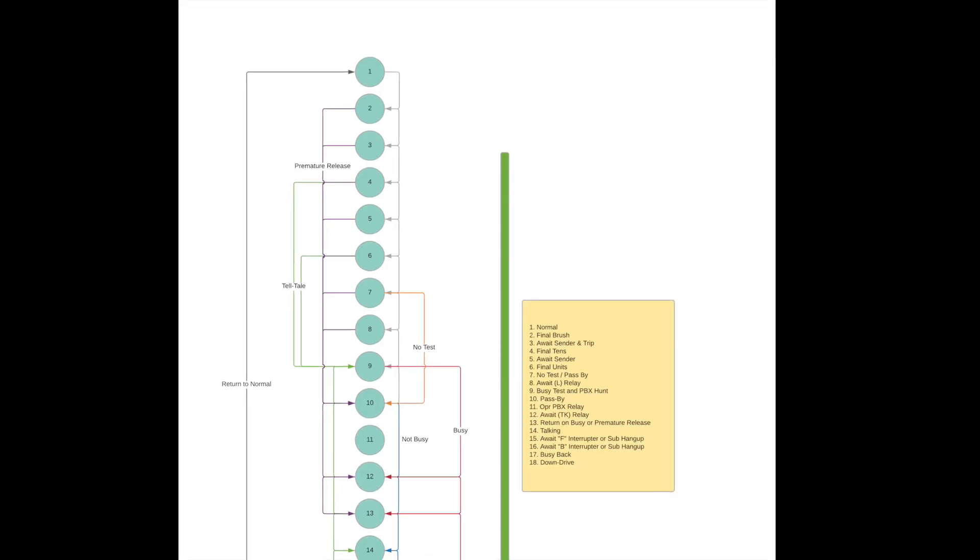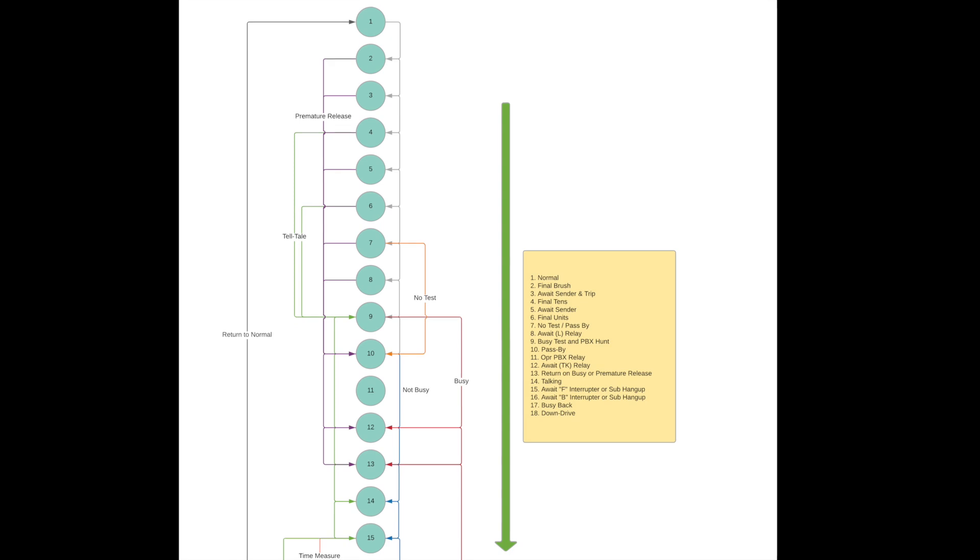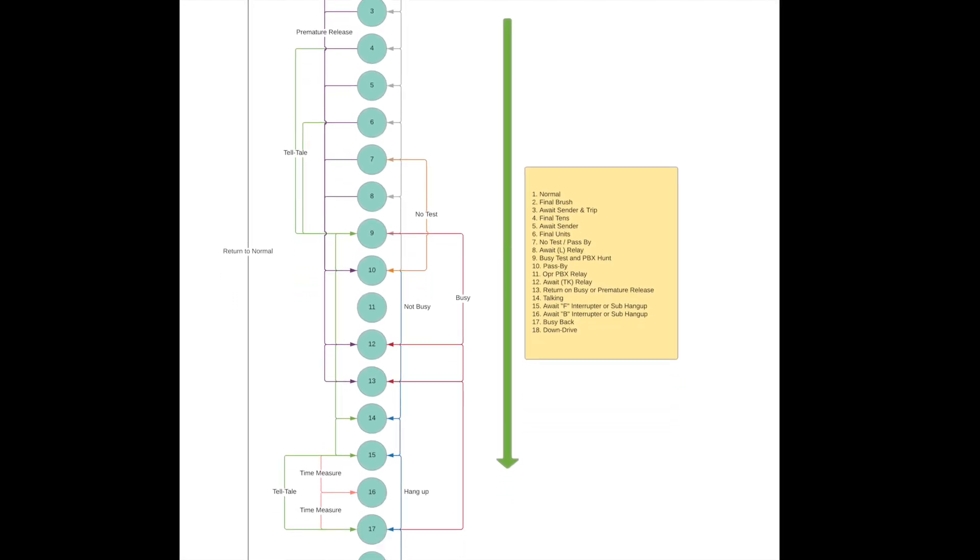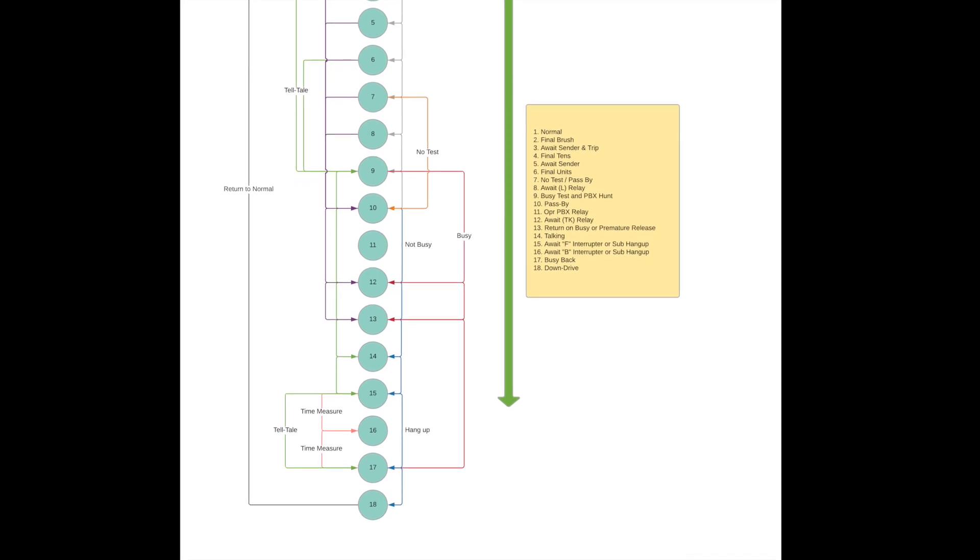So what do sequence switches do? Well, three basic things. Number one, they're finite state machines — there are some really great videos on YouTube about that and I'll put some links in the description. Second, they're multi-contact relays, so they're used for connecting lots of wires from one circuit to lots of wires from another circuit. And then third, they're used for outpulsing signals to other switches in certain cases.